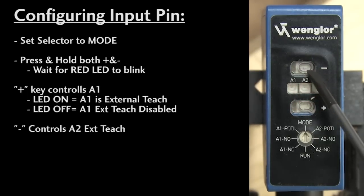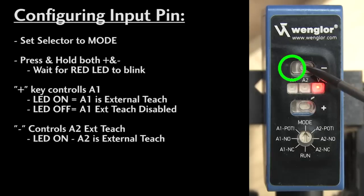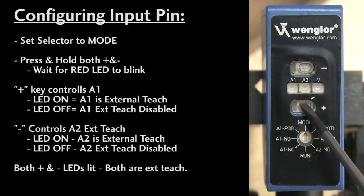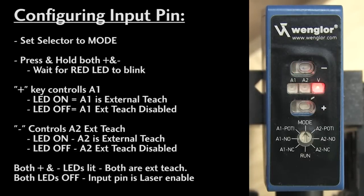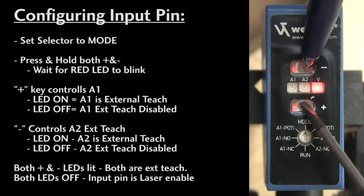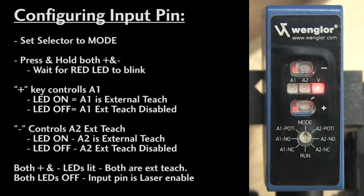Press the minus key to change output A2 to external teach. If the LED is lit, external teach is enabled. If the LED is off, external teach is disabled for pin A2. If both the plus and the minus keys are lit, then the input pin is used to do external teach on both output pins. If both LEDs are off, the input pin defaults to be a laser disable when 24 volts is applied. You can flip that by holding down both keys until they both blink. That inverts the laser enable. The input will now disable the laser when 0 volts is applied.